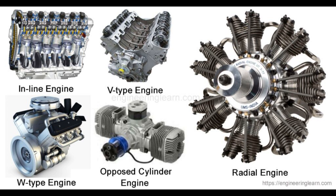8. Valve arrangement. According to the arrangement of inlet and exhaust valves, automobile engines are classified into four categories named L, I, F, and T — remembered using the word 'LIFT'. In an L-head engine, the inlet and exhaust valves are arranged side by side and operated by a single camshaft, with the cylinder and combustion chamber forming an inverted L shape.